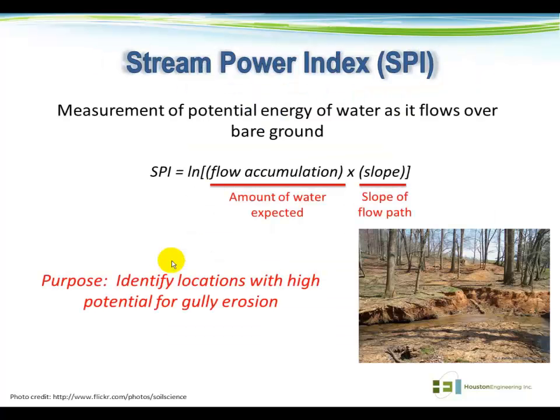The stream power index, or SPI, is basically a measure of potential energy of water as it flows over bare ground. SPI values are computed from two inputs, and we create a raster of SPI values for our whole study area. The first input is the flow accumulation grid — in other words, what's the drainage area that drains to each individual cell in the raster. The second input is the slope of the landscape at that location. Combining these two pieces of information, we come up with an SPI value.